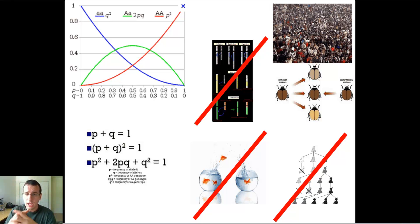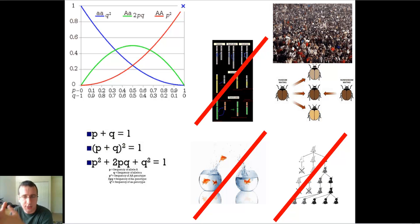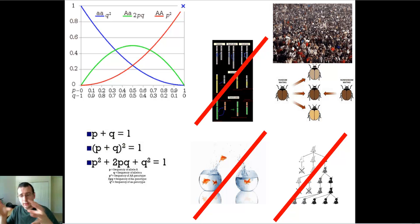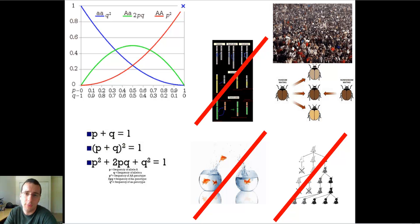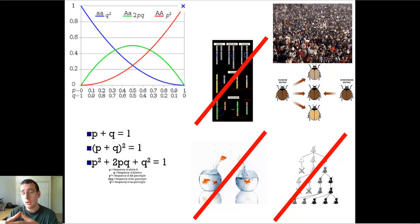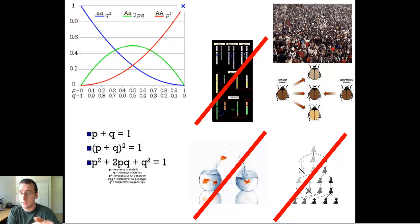Any of these events can actually change the allele composition of the population, and that is in itself evolution. In order to understand that, a scientist and a mathematician — Hardy and Weinberg — got together to actually try to discover the process by which evolution took place. And in order to understand the process, they looked at equilibrium: what conditions will make evolution impossible?